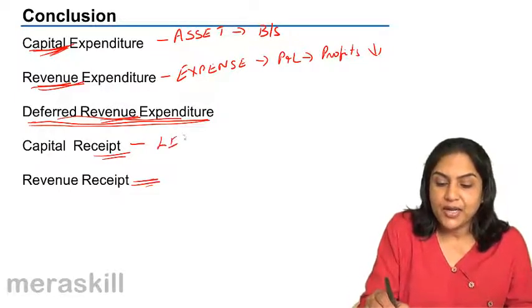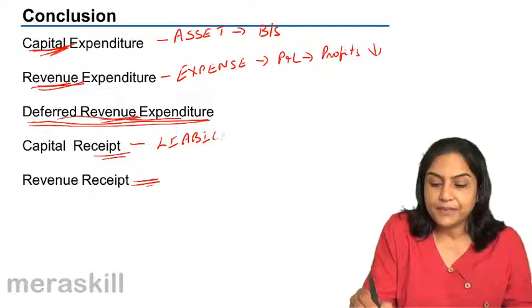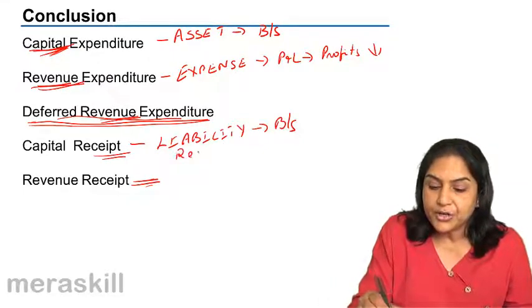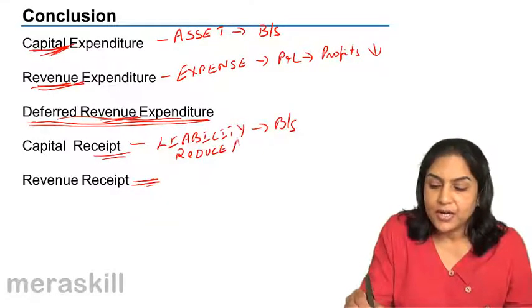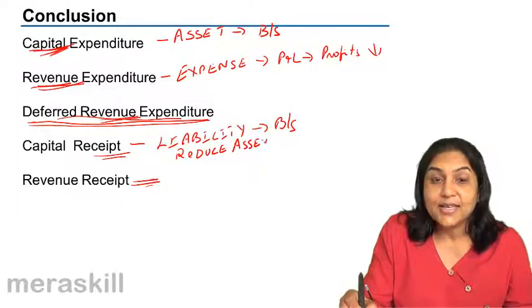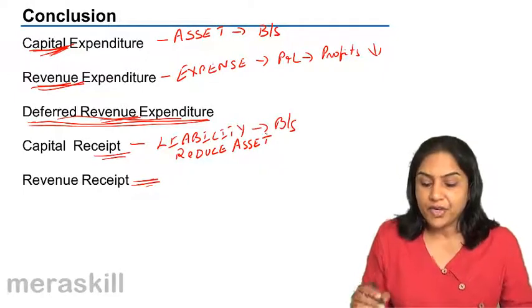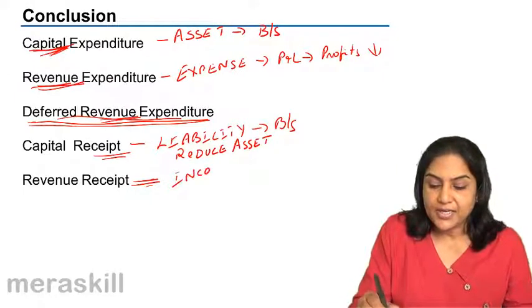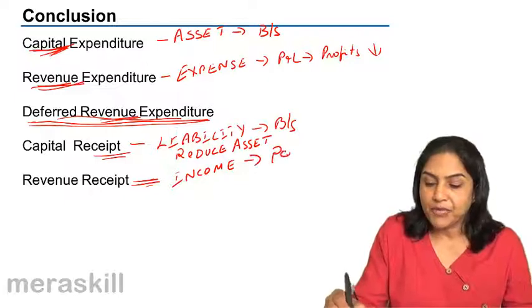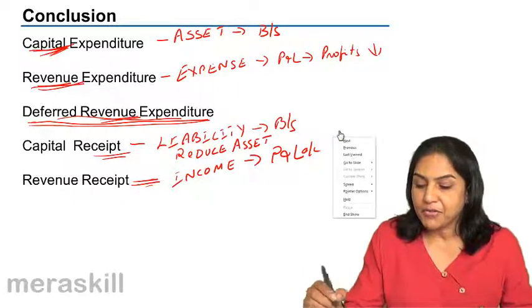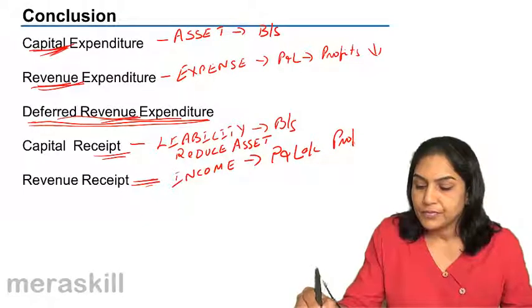Capital receipt usually taken as a liability and taken to the balance sheet. It's either a liability or it will reduce an asset like sale of an asset, sale of machinery or furniture. A revenue receipt is normally taken as an income, taken to the profit and loss account and will increase profits.